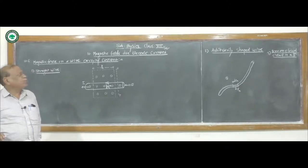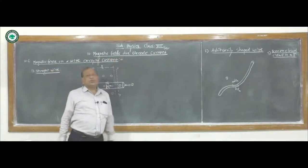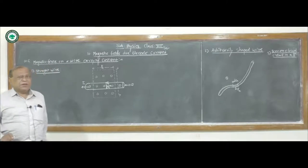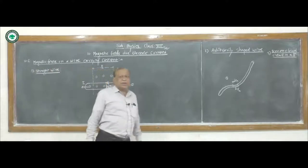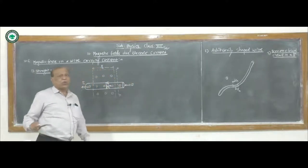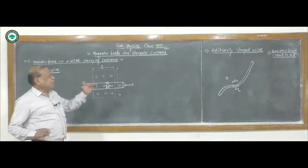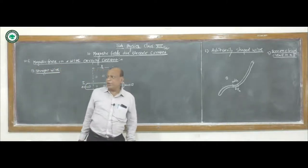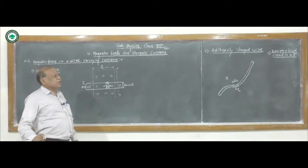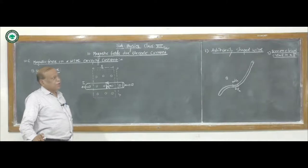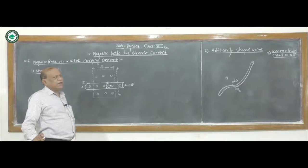This is my third lecture on the topic magnetic fields due to electric current. In previous lectures, we saw about what is meant by the Lorentz force — that force produced due to a magnetic field. When a current is flowing through a conductor, the magnetic field is perpendicular to that conducting current, and the direction of that magnetic field is also explained by the right-hand rule.